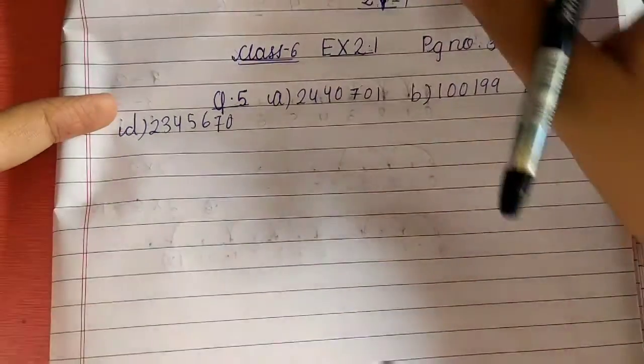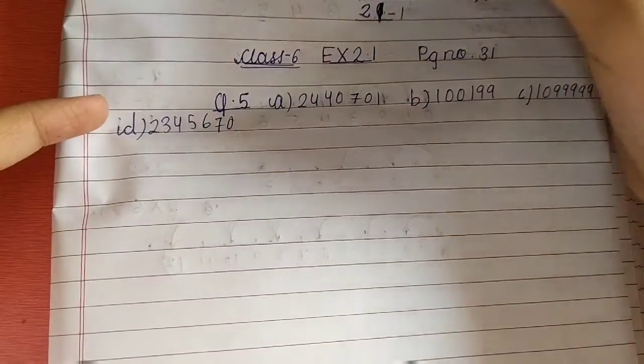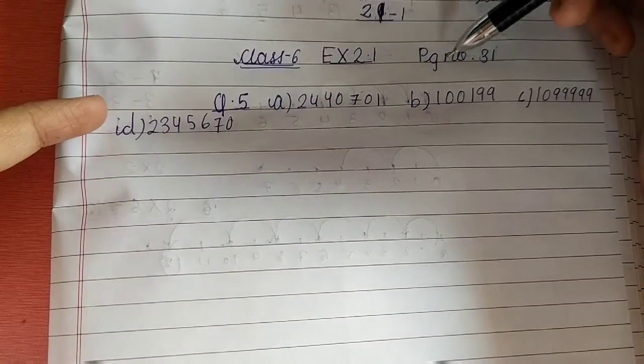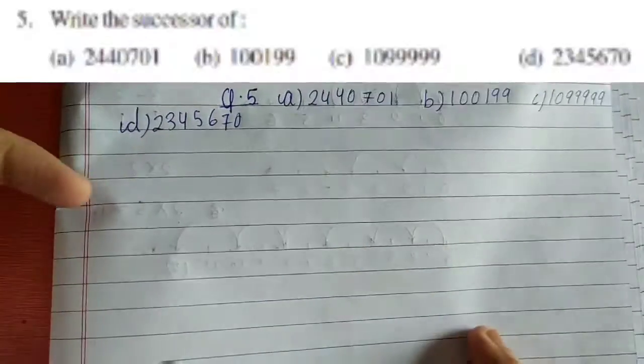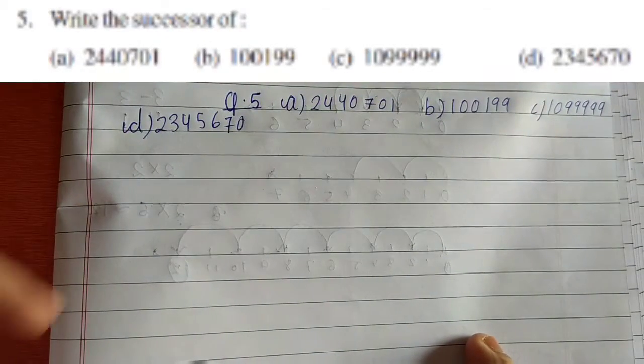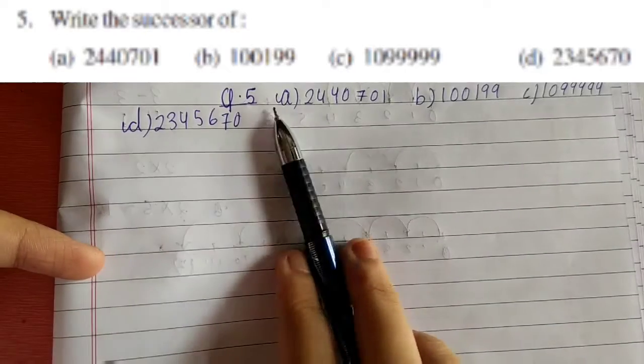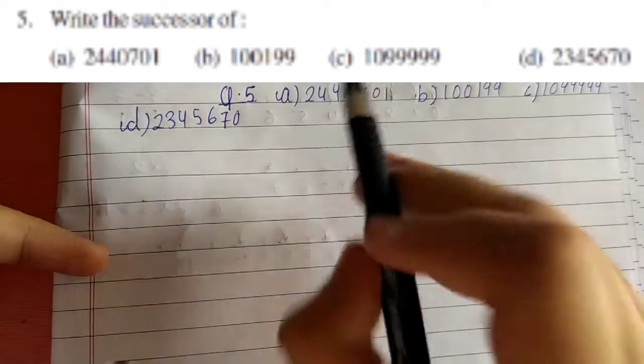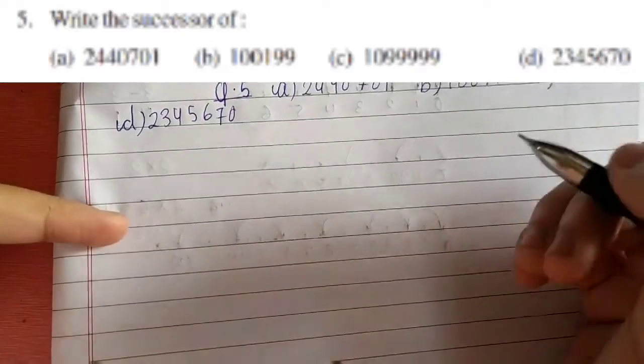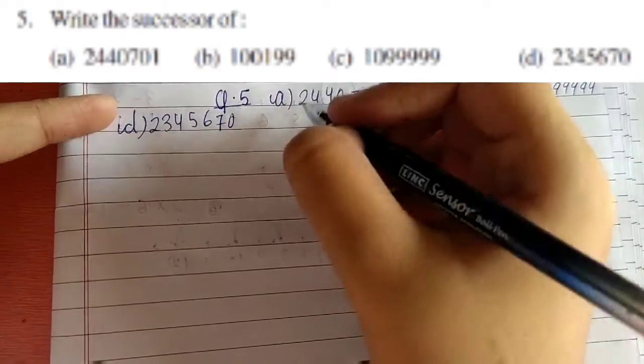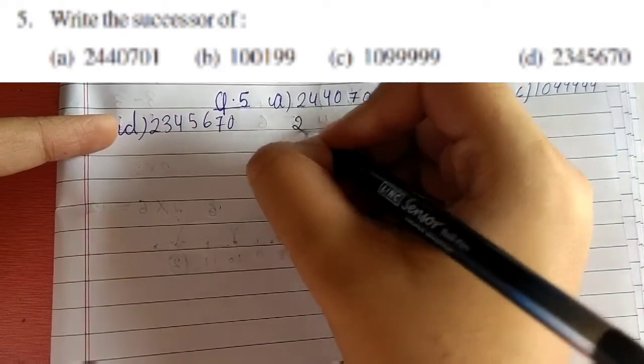Hello friends, welcome back to my YouTube channel M2K Science. In today's video, we will be solving Exercise 2.1, page number 31, Class 6, question number 5. The question is: write the successor of (a) 2440701. We know that when we have to write the successor, we add 1 to the number, so we will get 2440702.